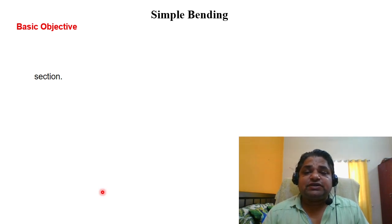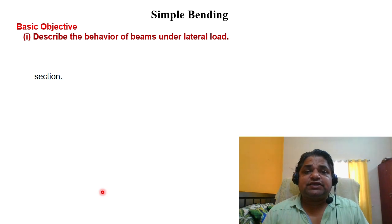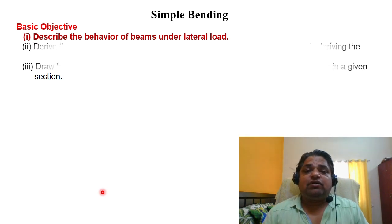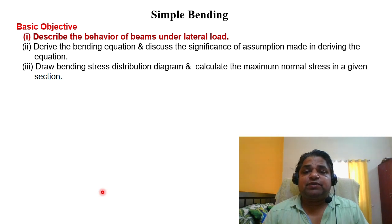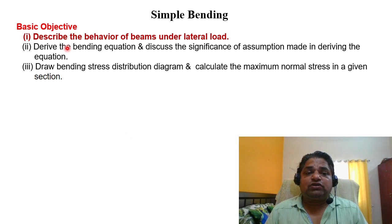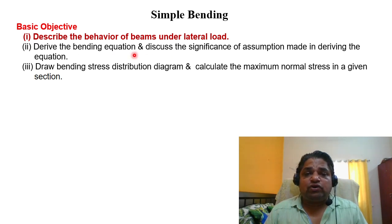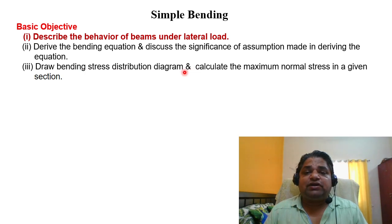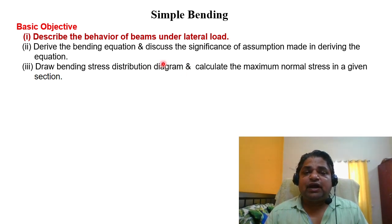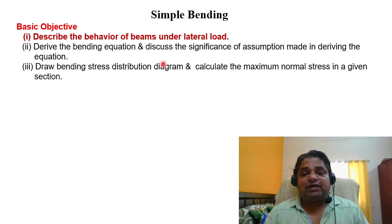The basic objectives of this course include: describing the behavior of the beam under lateral load when it creates a bending moment; deriving the bending equation and discussing the significance and assumptions made; and drawing the bending stress distribution diagram and calculating maximum normal stresses in a given section, which we partially covered during the discussion of SFD and BMD.